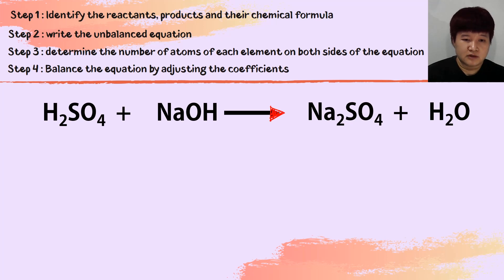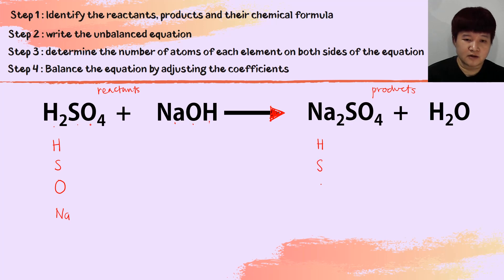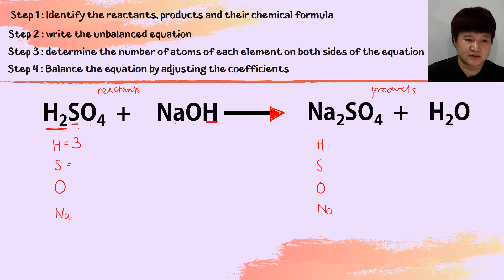Let's go to another example that looks more complicated because you have more atoms, but it's the same approach. We identify the arrow, find the reactants and products, then rewrite the elements from the reactant: hydrogen, sulfur, oxygen, sodium. Note that oxygen and hydrogen appear in multiple compounds, so we only write each element once and total them up. On the reactant: hydrogen = 2+1 = 3, sulfur = 1, oxygen = 4+1 = 5, sodium = 1.